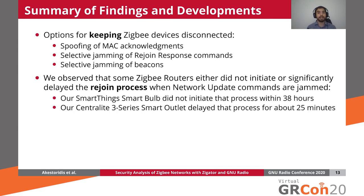Interestingly, we observed that some Zigbee routers did not initiate at all or significantly delayed the rejoin process when they failed to receive the network update command. In particular, our smart bulb did not initiate at all during the 38 hours that we monitored, while our Centralite 3-series smart outlet initiated that process only after about 25 minutes following our selective jamming of the network update command.